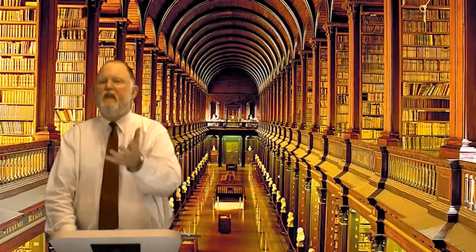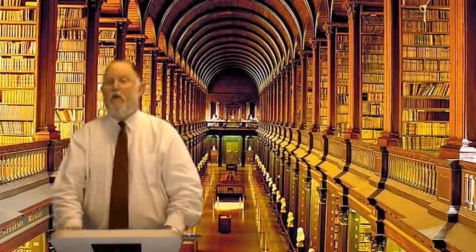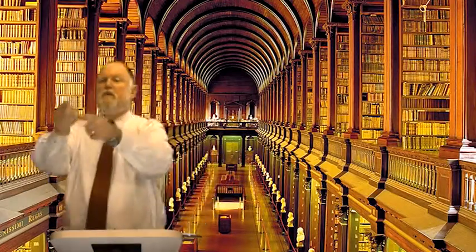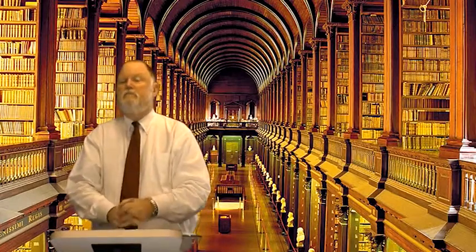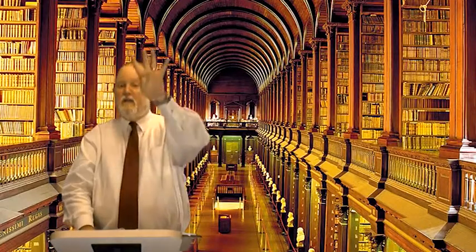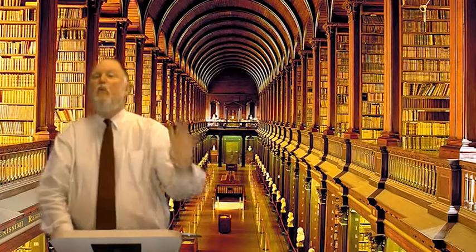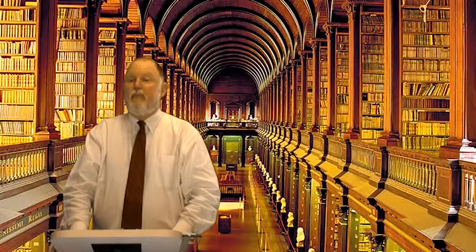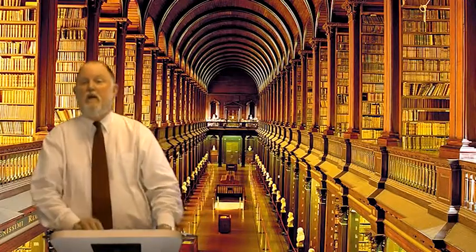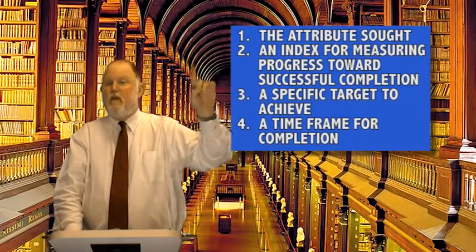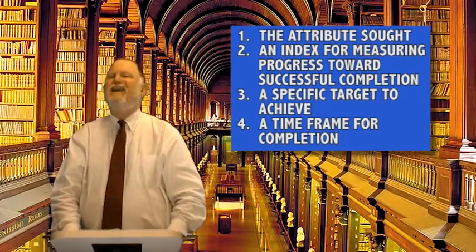As managers, we give objectives all the time, then wonder why we didn't meet them. Here's why — you did it wrong. If you give anyone an objective — yourself or someone else — it has to contain four elements. If it does not, it will not work. It's not worth the paper it's written on. Here are the four things an objective must contain. Number one: attribute — that's what it is you want.